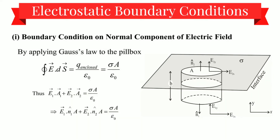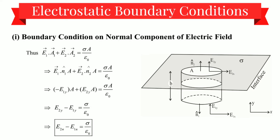To calculate the boundary condition we will use Gauss's law. Since sigma is varying from point to point, we consider an extremely small area a so that sigma remains constant on that area. Applying Gauss's law to the pillbox: the closed integral of E·dS equals q enclosed upon ε₀, which gives σa upon ε₀. We can write this as E₁·A₁ plus E₂·A₂ equals σa upon ε₀, and using unit vectors we rewrite it as E₁n̂₁·a plus E₂n̂₂·a equals σa upon ε₀.